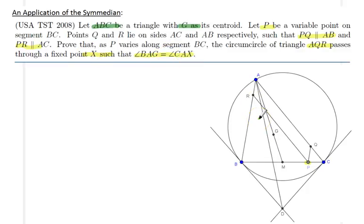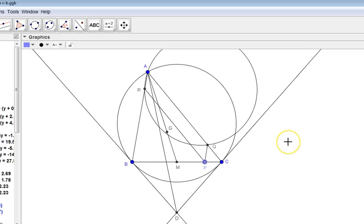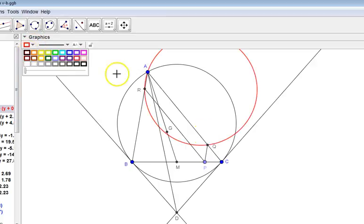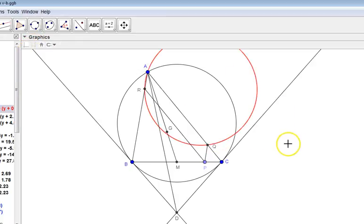What I did is I went ahead and created a GeoGebra construction. Let me show you my construction here. In order to visualize it, I did go ahead and draw the circumcircle of ARQ. You can see it here. Let me actually change the color. Let's make it red. Good. So let's see what happens as P moves between B and C.